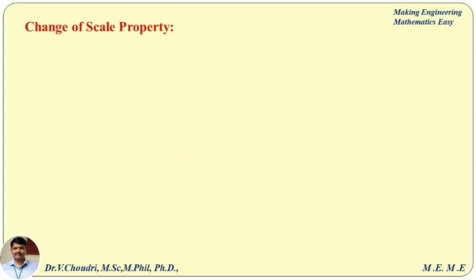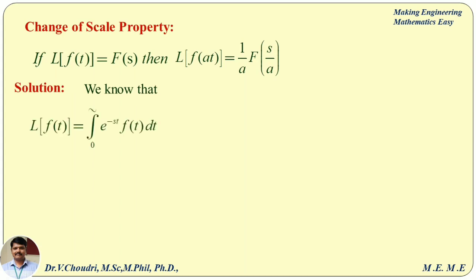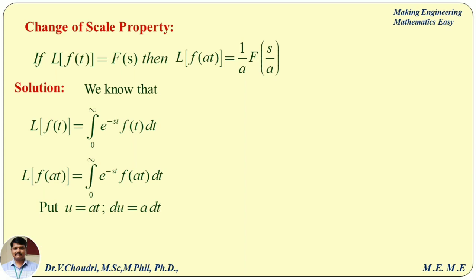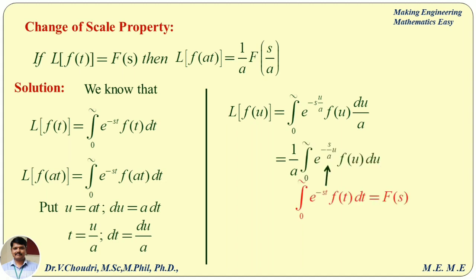Now let us see the change of scale property. If L of f(t) = F(s), then L of f(at) = (1/a)·F(s/a). To prove this: L of f(at) = integral from 0 to infinity of e^(−st)·f(at) dt. Using substitution u = at, so du = a·dt, t = u/a, dt = du/a. Taking u directly as t, the limits remain unchanged. The integral becomes (1/a)·integral from 0 to infinity of e^(−(s/a)t)·f(t) dt, which is of the standard form with s replaced by s/a. Therefore the answer is (1/a)·F(s/a).